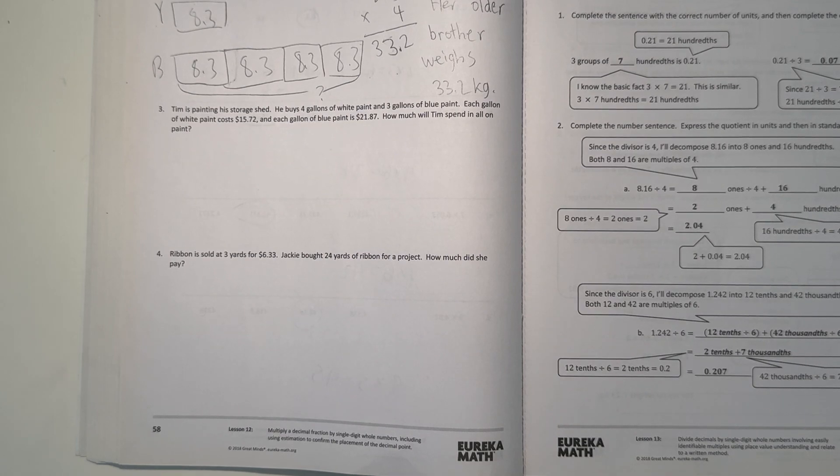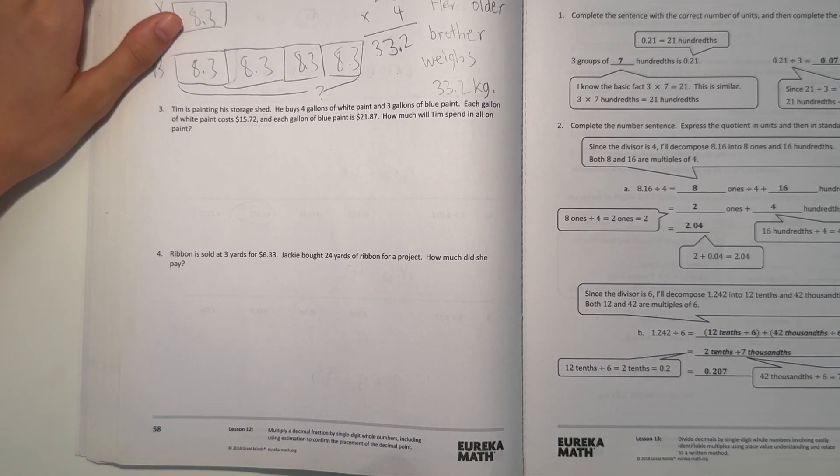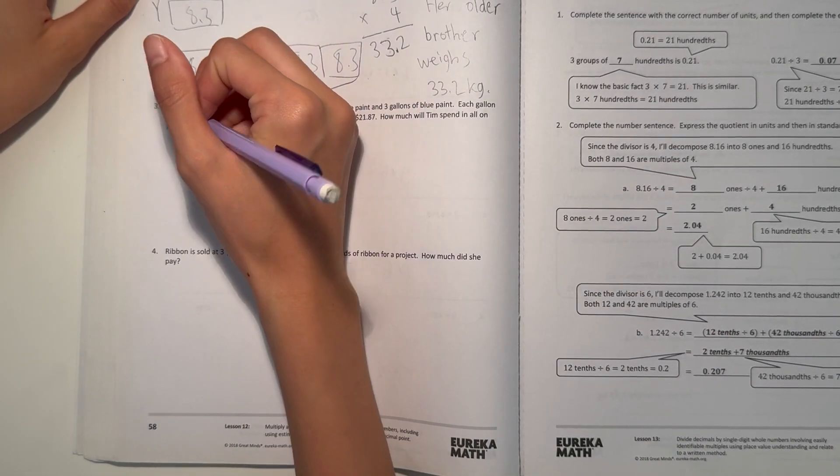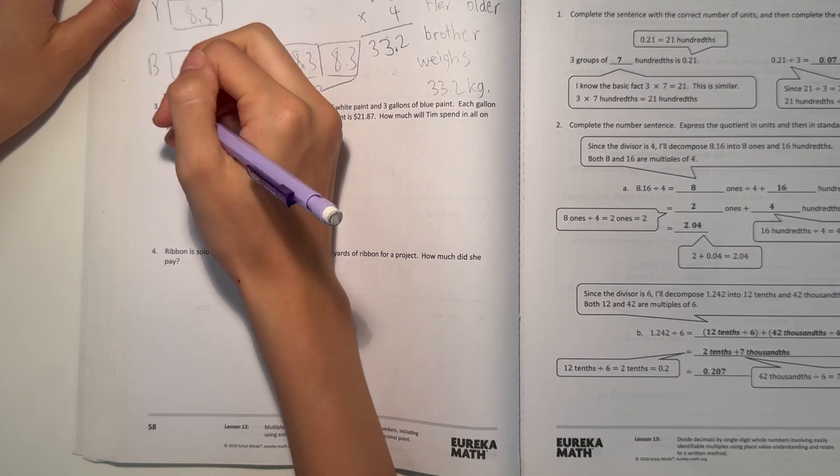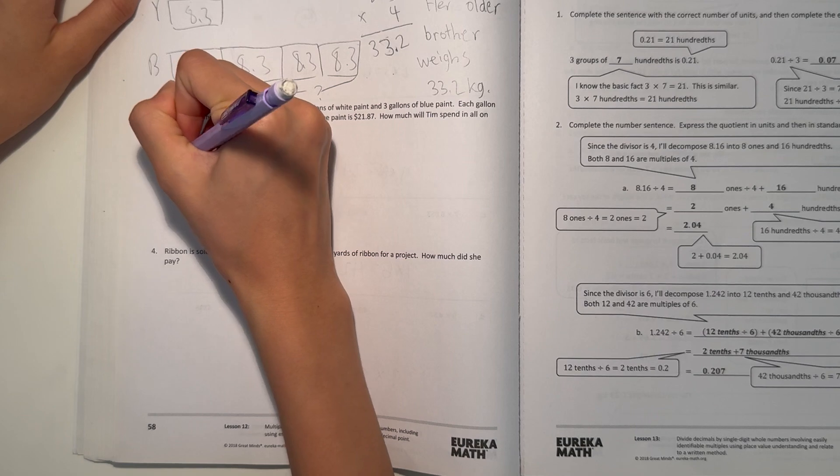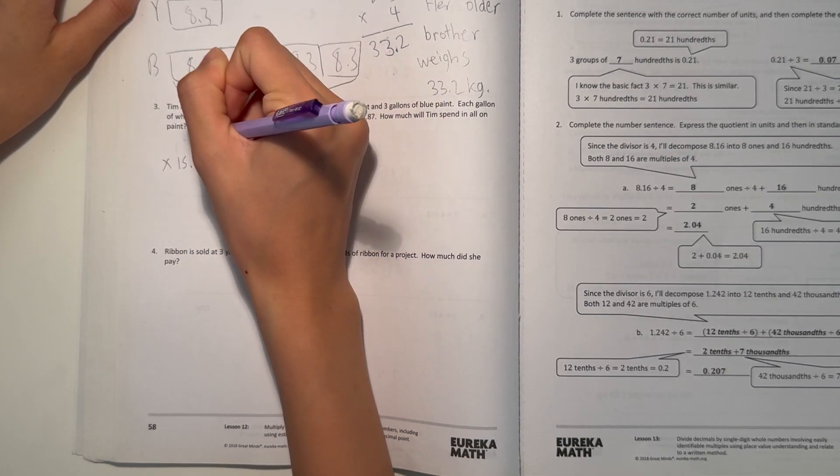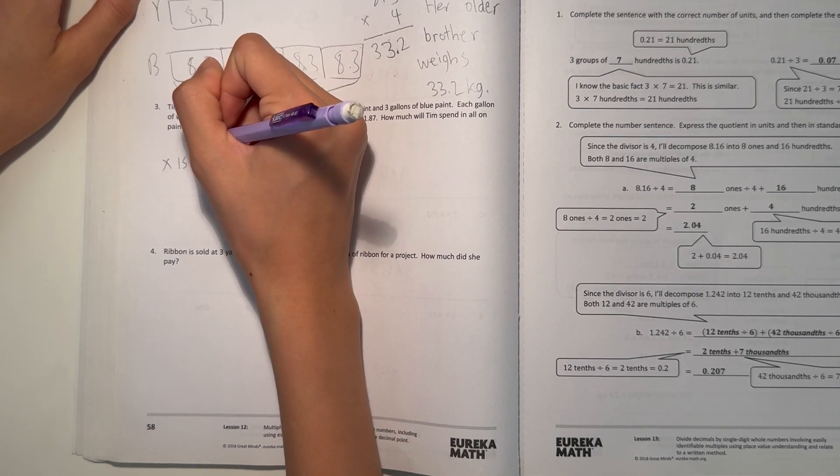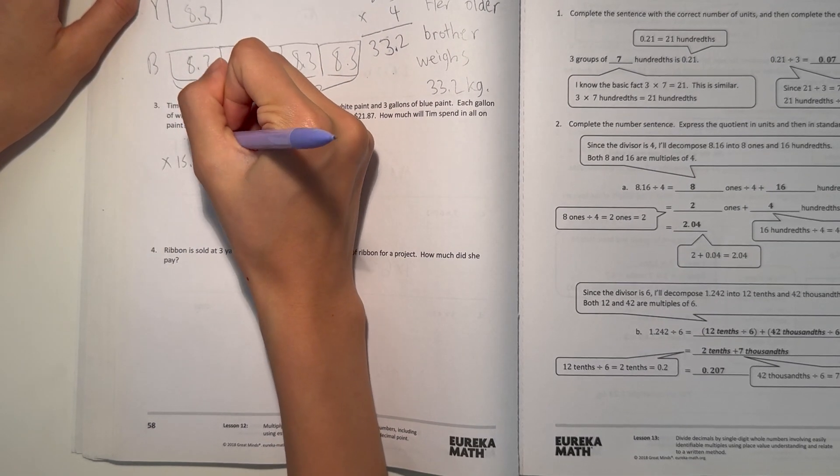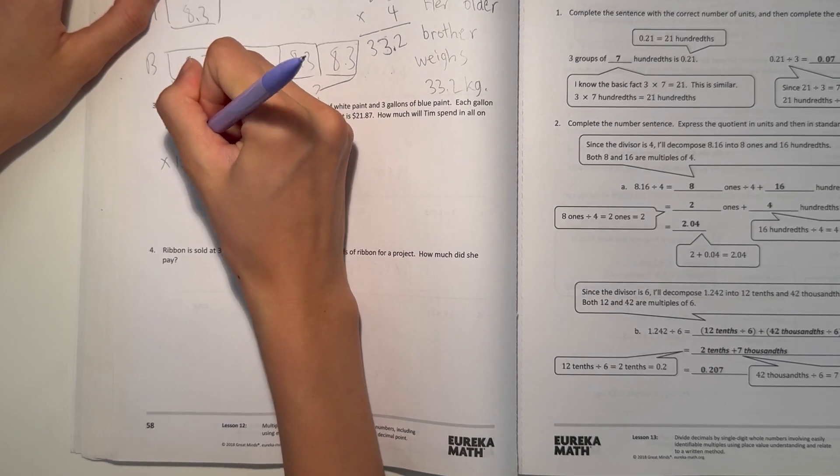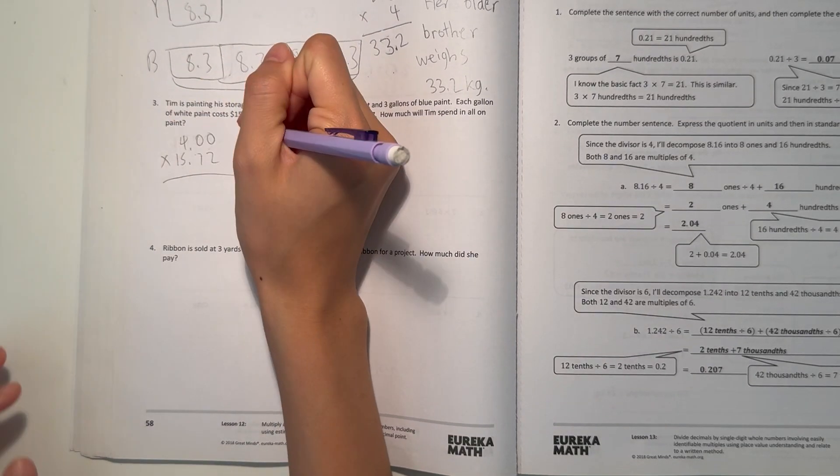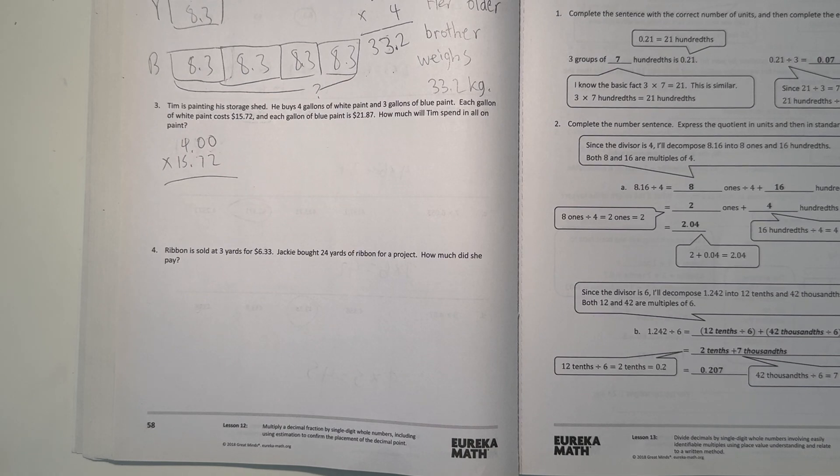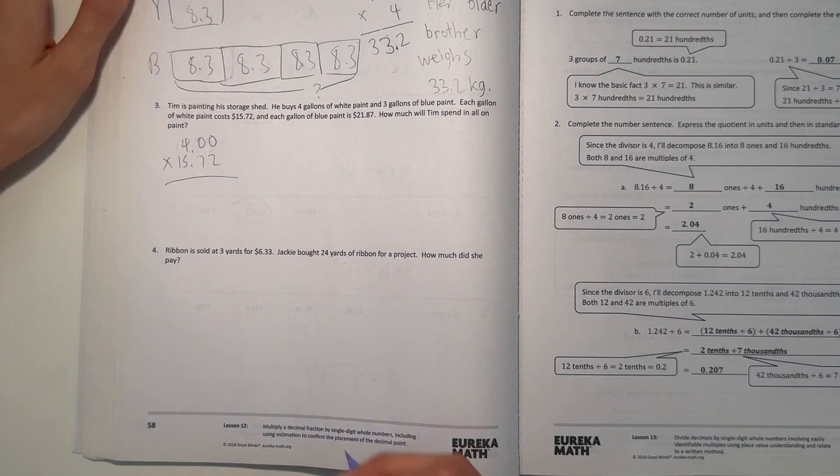So 4 gallons of white paint. And each gallon is $15.72. Let's see. I'm going to do 4 times 15.72. Oh, wait. I read it on the wrong side. Oops. Alright, so let's start. Yeah, we actually did not have to write it like that. Well, you know, 0 times all these digits would be 0, 0, 0, 0.